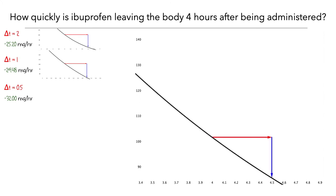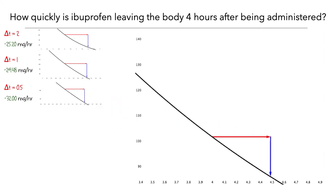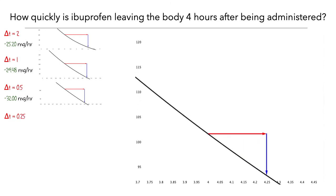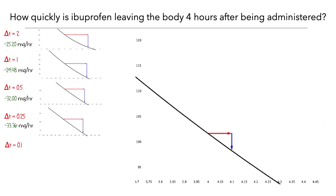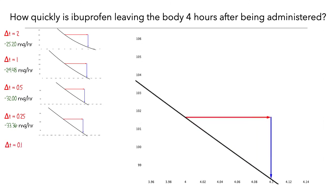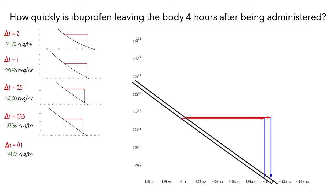We'll zoom in a bit to see this better, and then keep this image on the screen. Then we could use a smaller delta t, say 1 quarter. This would give us an average rate of –33.36 mg per hour. And we'll save this picture too. Then we could use an even smaller delta t, say 1 tenth. This would give us an average rate of –34.22 mg per hour. And we'll save this picture.